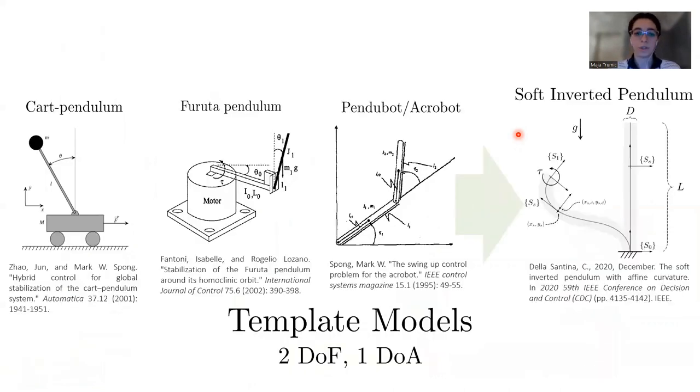In our work, we follow the approach where the parallel is made between rigid robots and soft robots. In this slide, you can see some template models of famous underactuated systems that even though they were simple, were quite important to understand how to control underactuated rigid systems. Here we have Cart Pendulum, Furuta Pendulum, Pendubot and Acrobot. In this paper, we consider a soft inverted pendulum that is basically a soft counterpart of Acrobot.